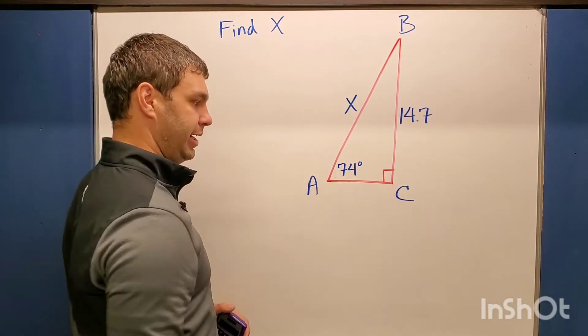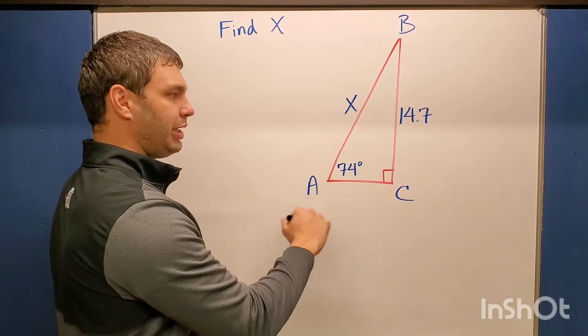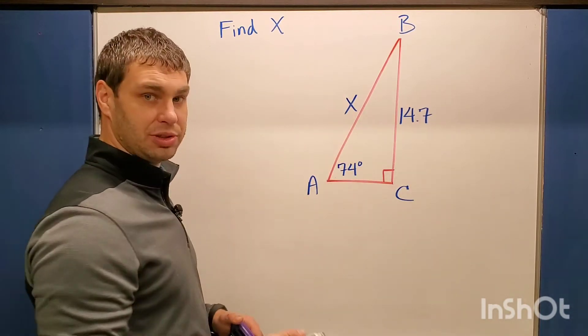So compared to the angle that we're given, angle A, which is 74, we have the opposite and the hypotenuse, which is our sine function.